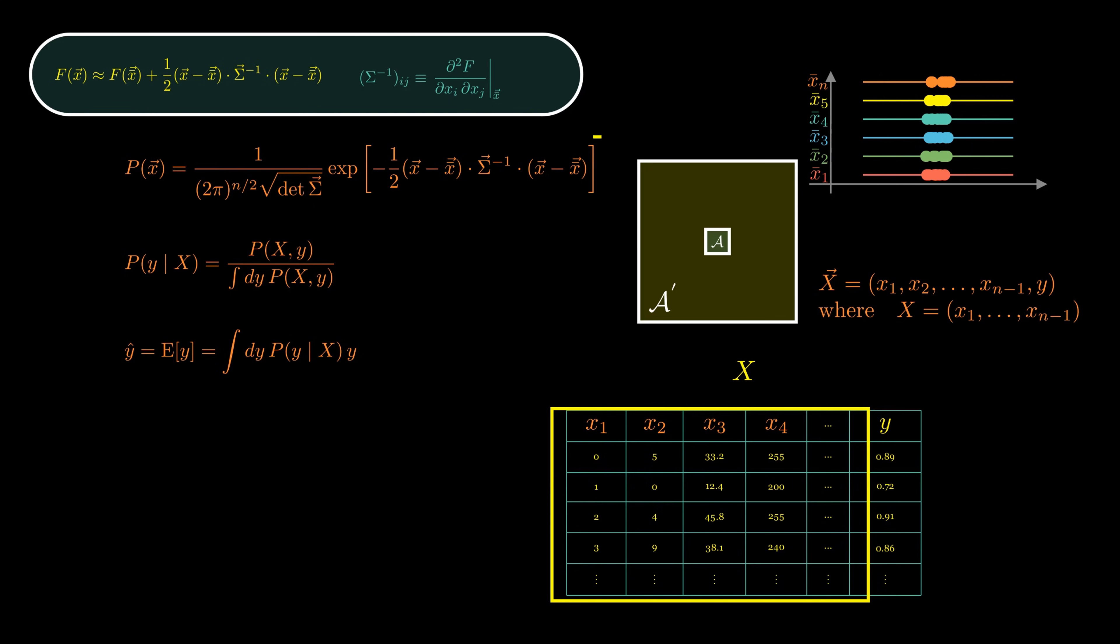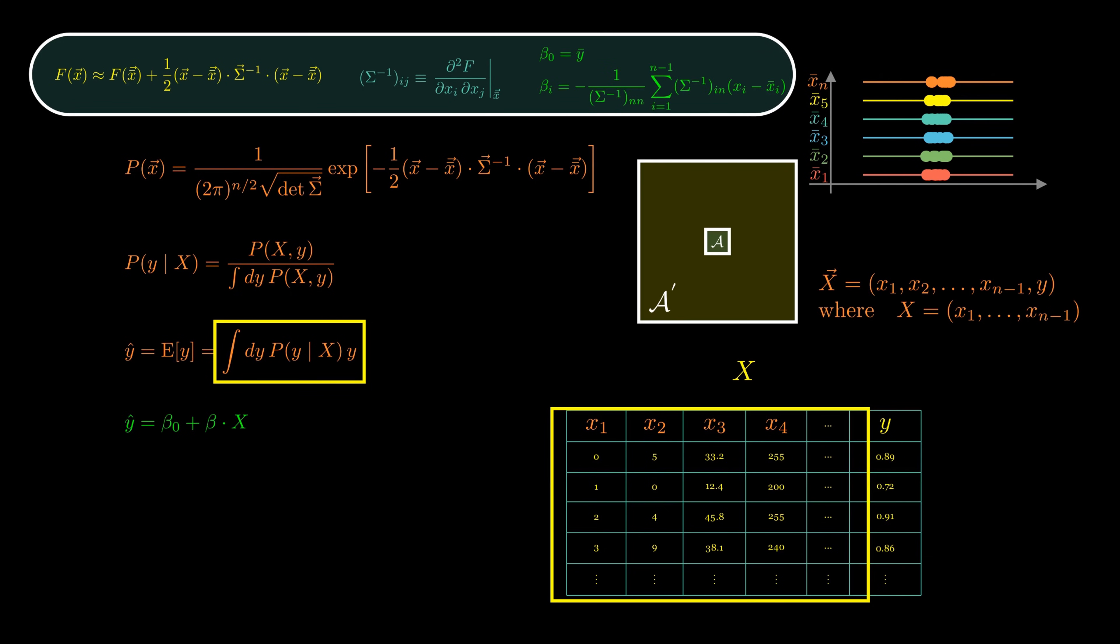When you compute this integral using the Gaussian form that we derived above, it simplifies to a linear function of X. This equation is what we know as linear regression in machine learning. A straightforward calculation of the integral above will show how the coefficients beta 0 and beta can be expressed in terms of the parameters of the probability function. So, as you can see, linear regression, as one of the basic predictive models in machine learning, has deep ties with some of the concepts in physics.